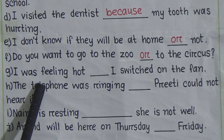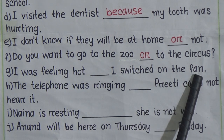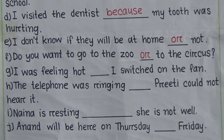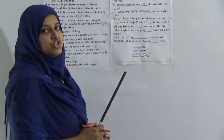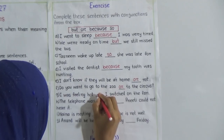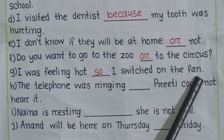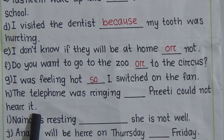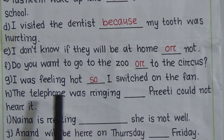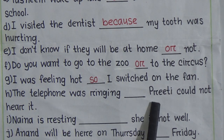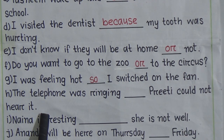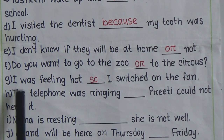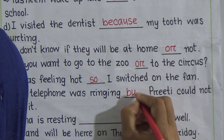Number g: 'I was feeling hot ___ I switched on the fan.' I was hot so I switched on the fan - the answer is 'so': 'I was feeling hot so I switched on the fan.' Number h: 'The telephone was ringing ___ Preety could not hear it.' There is a positive side and a negative side, so the answer is 'but': 'The telephone was ringing but Preety could not hear it.'